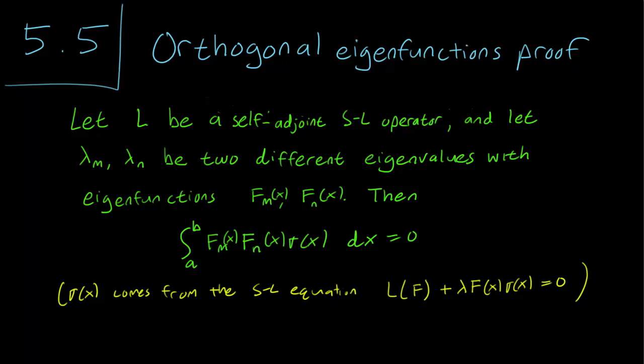Remember we had this property whenever we had two sine terms of different frequencies, and we integrated them together for the Fourier theorem proof. In that setting, sigma(x) is 1, and we got 0.